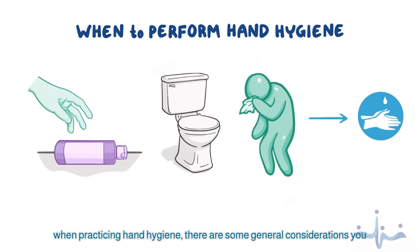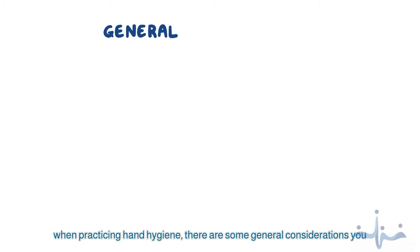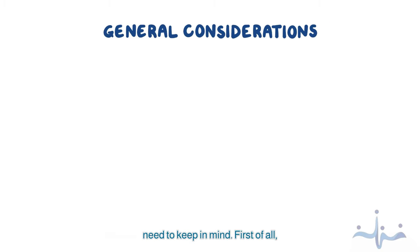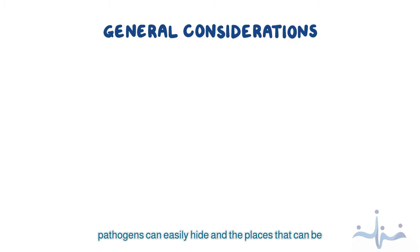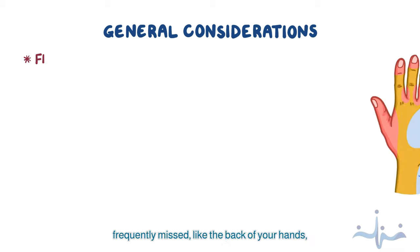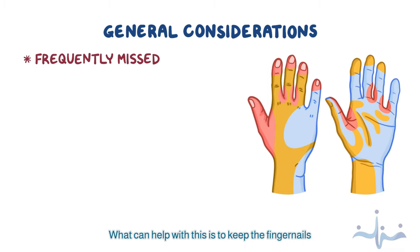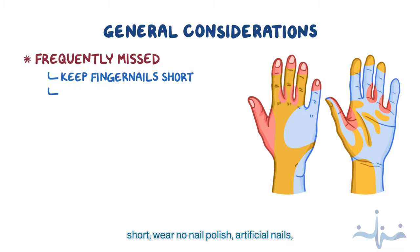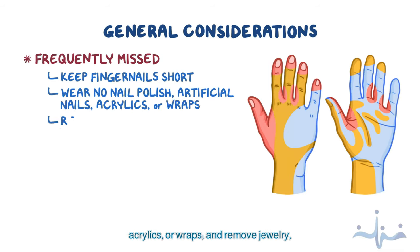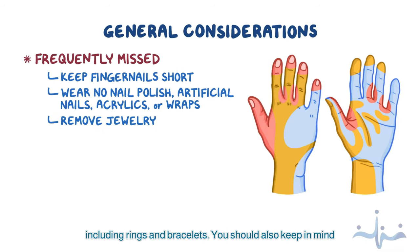When practicing hand hygiene, there are some general considerations to keep in mind. It's important to pay special attention to the places where pathogens can easily hide and the places that can be frequently missed, like the back of your hands, between the fingers, and under or around your nails. Keep fingernails short, wear no nail polish, artificial nails, acrylics, or wraps, and remove jewelry, including rings and bracelets.